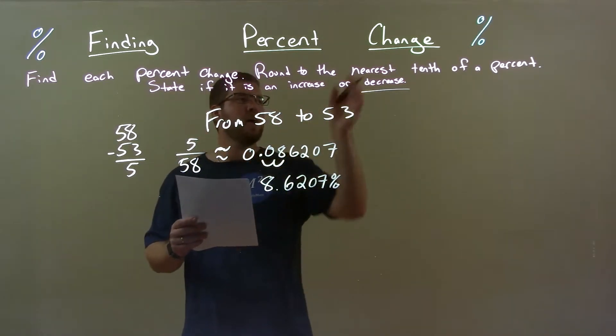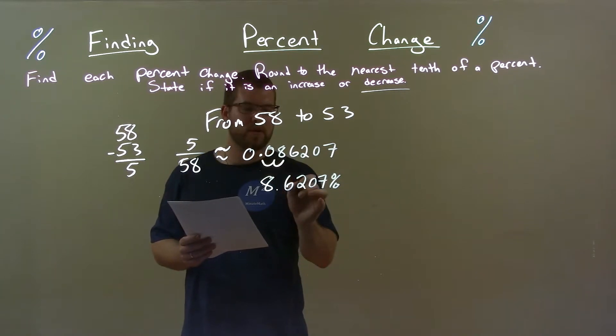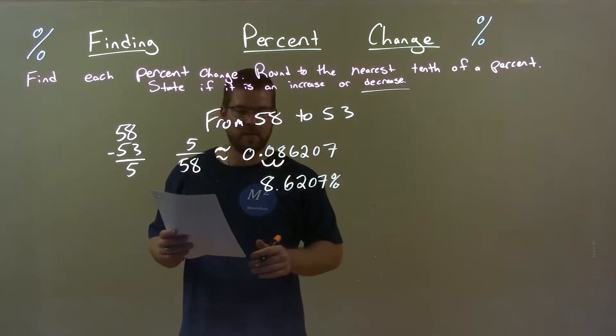Round that to the nearest tenth. The six, we look at that, look to the right. That's a two, causes the six to stay where it is.